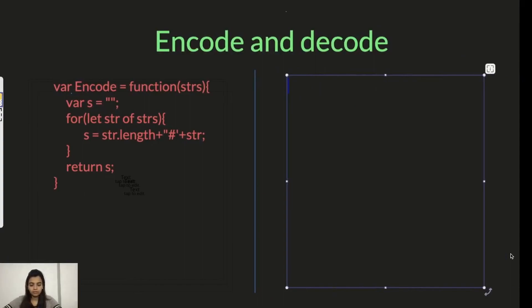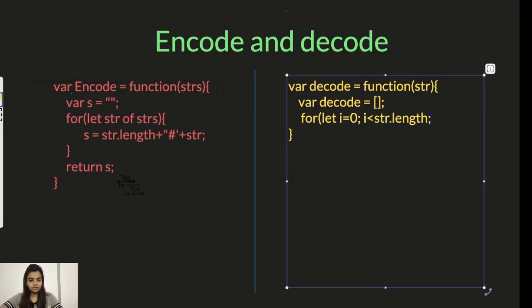Now let's start with the decode function. So in this the input will be the string which we send from encode function. So in this what we do is we declare a decode array to have all our words in it. We'll have a for loop which goes from i equals zero to string.length. Iterate through the entire string.